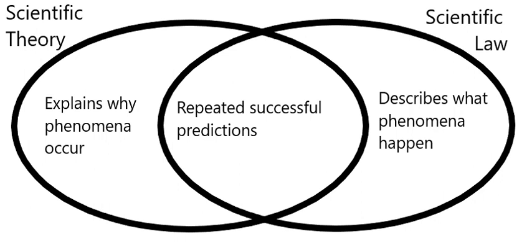Scientific laws are typically conclusions based on repeated scientific experiments and observations over many years and which have become accepted universally within the scientific community. A scientific law is 'inferred from particular facts, applicable to a defined group or class of phenomena, and expressible by the statement that a particular phenomenon always occurs if certain conditions be present.' The production of a summary description of our environment in the form of such laws is a fundamental aim of science.